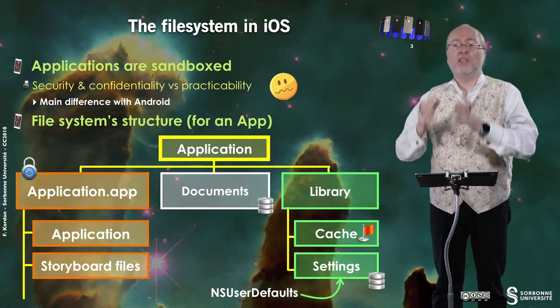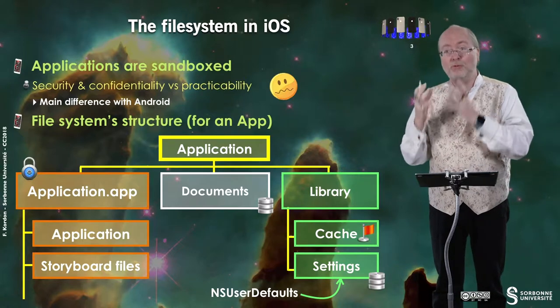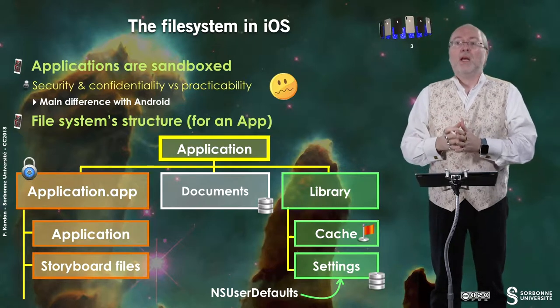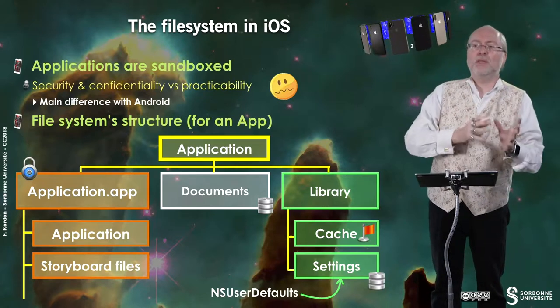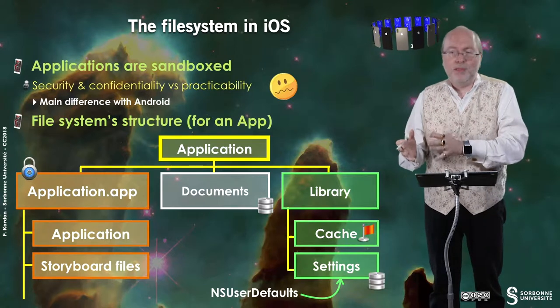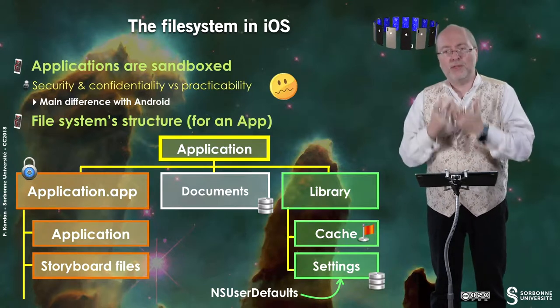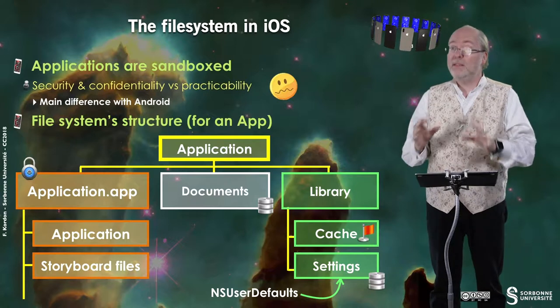A file system is a tree. You have the root of iOS, then the root of the only user — maybe sooner or later there will be several users available — and then for each application you also have a root. You can do whatever you want in this root, more or less, but you cannot get out of it. It's a matter of preserving security and confidentiality versus practicability from the developer's viewpoint. That's the main difference with Android.